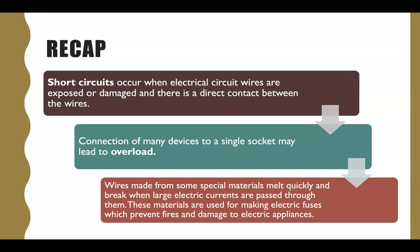Let's have a quick revision. Short circuits occur when electrical circuit wires are exposed or damaged and there is direct contact between the wires. Connection of many devices to a single circuit may lead to overload. Wires made from special materials melt quickly and break when large electric currents pass through them. These materials are used for making electric fuses which prevent fire and damage to electrical appliances.